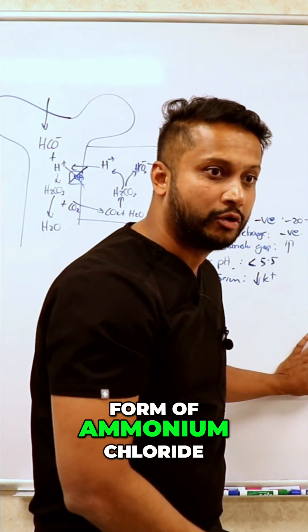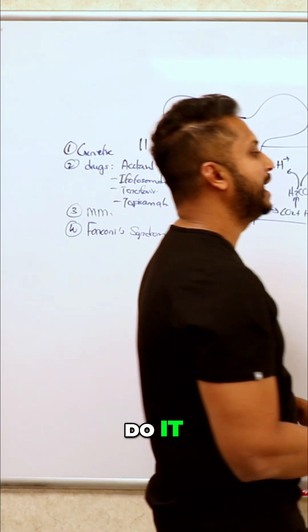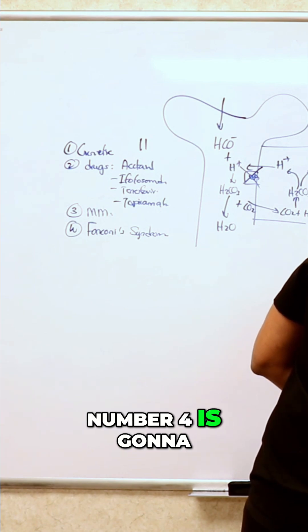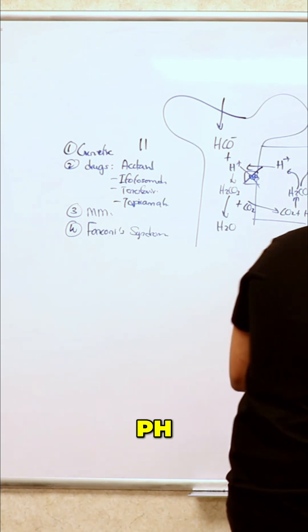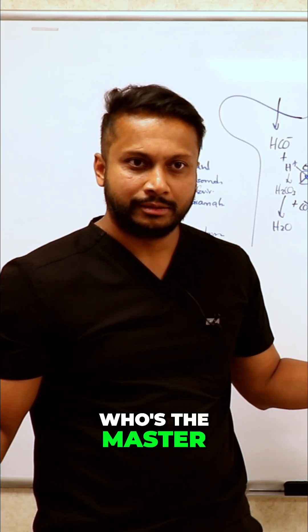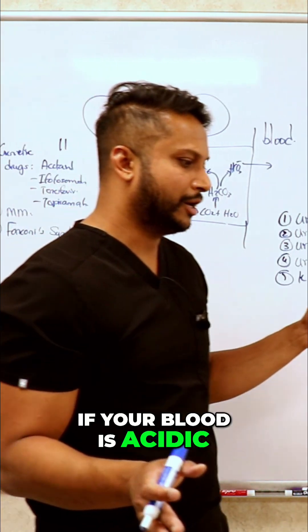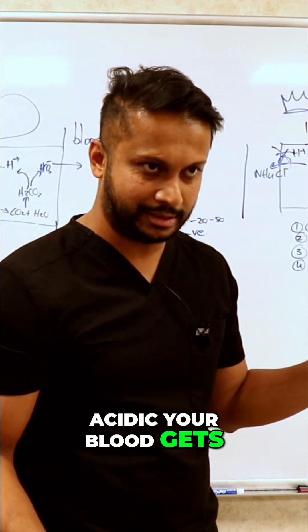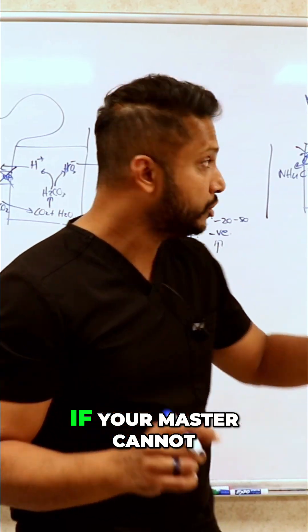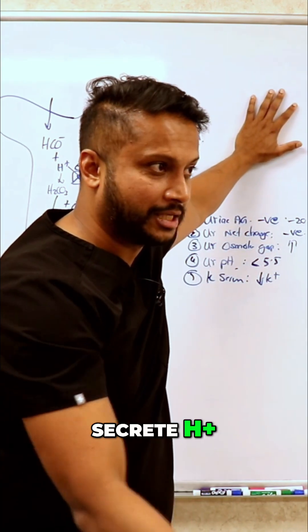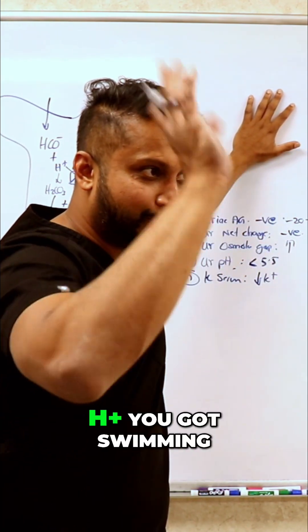Number four is going to be your urine pH. Now, who's the master? If your blood is acidic—I don't care how acidic your blood gets—if your master cannot secrete H+, then no matter how much H+ you've got swimming in your bloodstream, you will not be able to secrete H+ in your urine. So would your urine be acidic? No.